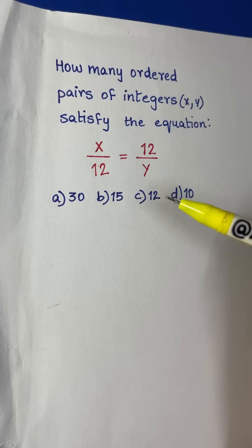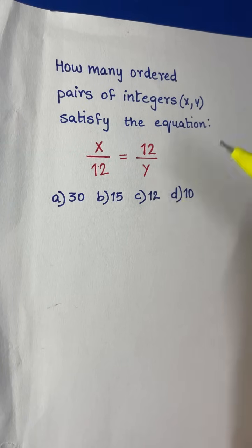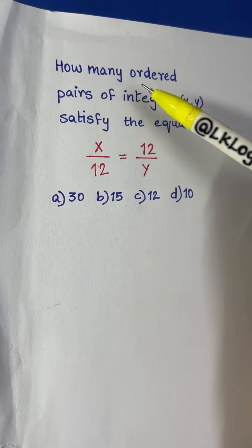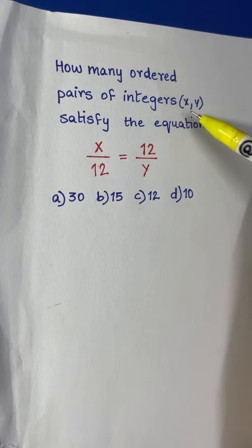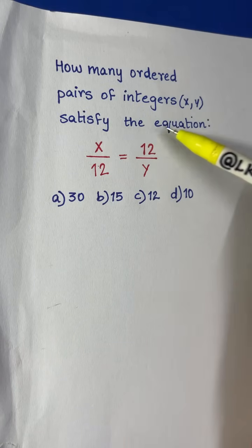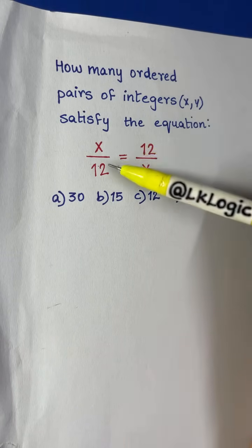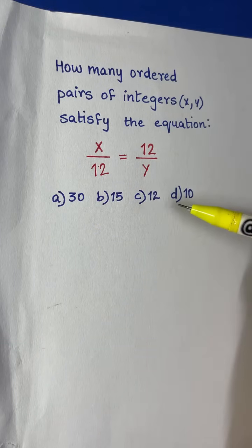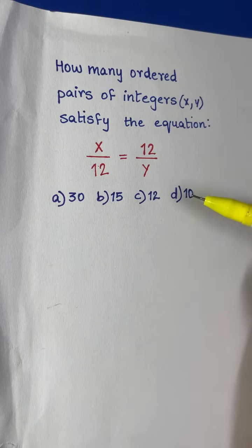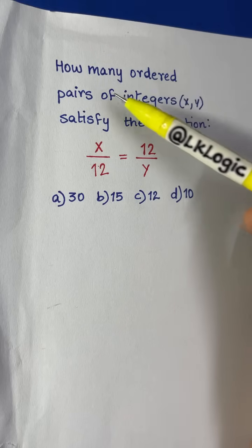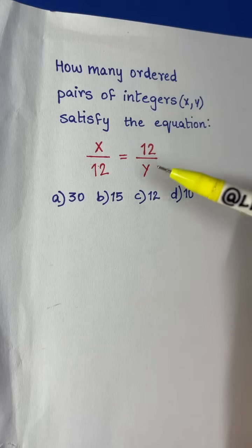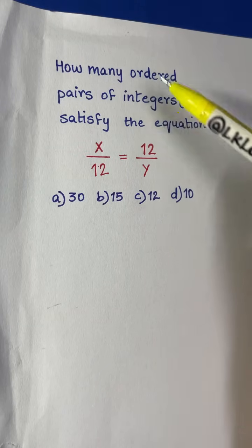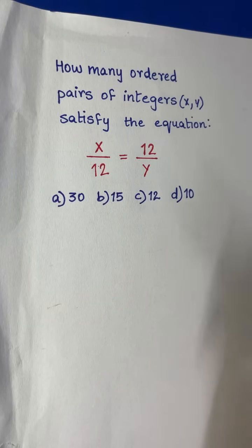Hi everyone, in this live session we are going to solve this equation. The question says: how many ordered pairs of integers x, y satisfy the equation x/12 = 12/y? You have four choices: 30, 15, 12, or 10. So you have to find how many ordered pairs of integers satisfy this equation.